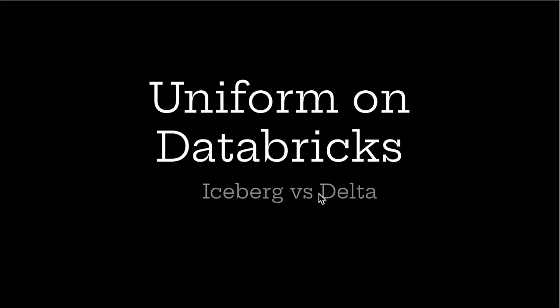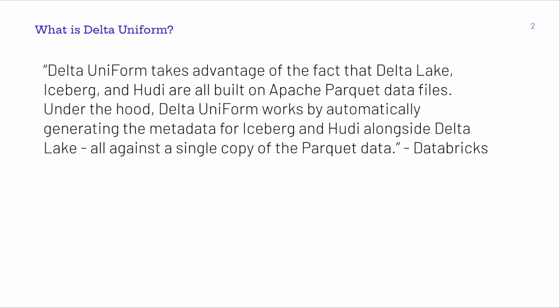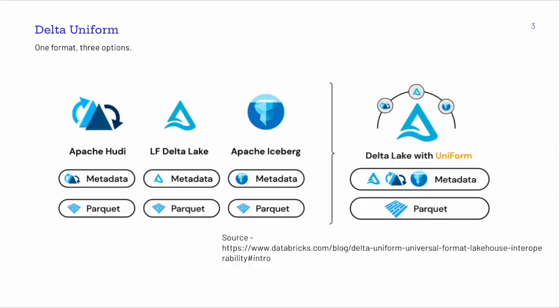So what is Delta UniForm? Delta UniForm takes advantage of the fact that Delta Lake, Iceberg, and Hudi are all built on top of Apache Parquet data files. These are different storage systems, but under the hood they're very similar. Delta UniForm works by automatically generating metadata for Iceberg and Hudi alongside Delta Lake, all against a single copy of the Parquet data. That means you can have a Delta Lake UniForm table and seamlessly have versions of that table in Iceberg or Hudi — a three-in-one solution.